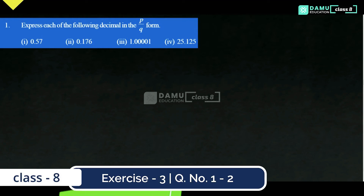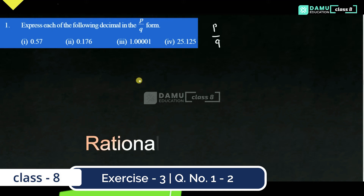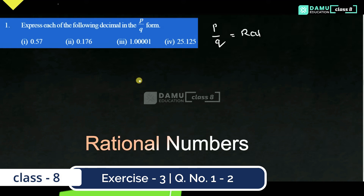Hello viewers, thanks for watching our videos. In this module, we are going to discuss expressing each of the following decimals in P by Q form. We have to write the given decimal numbers into P by Q, that is, in rational number format.